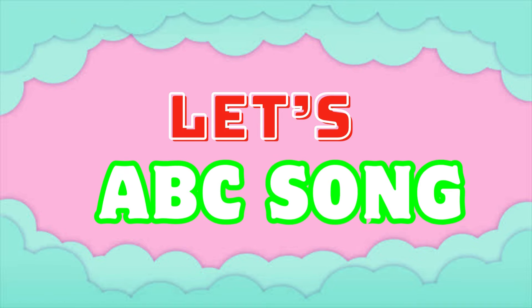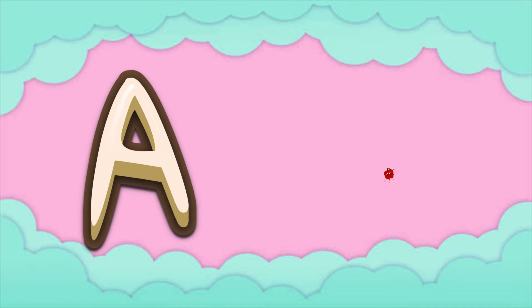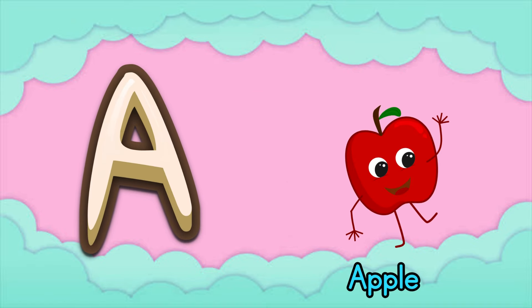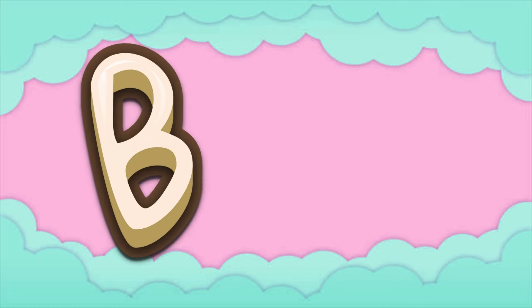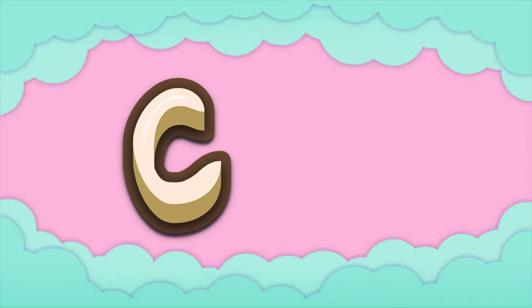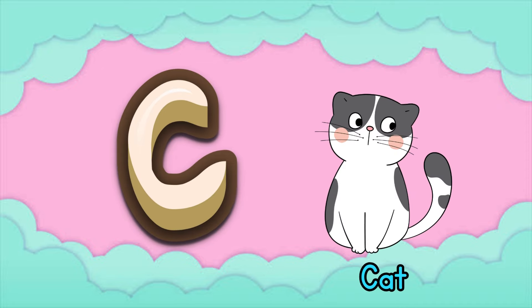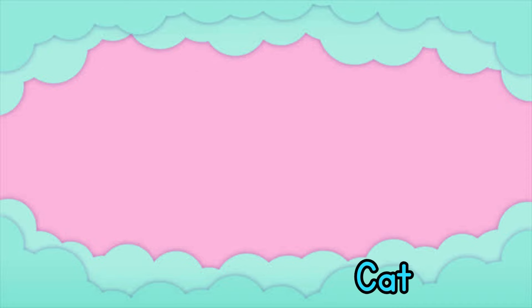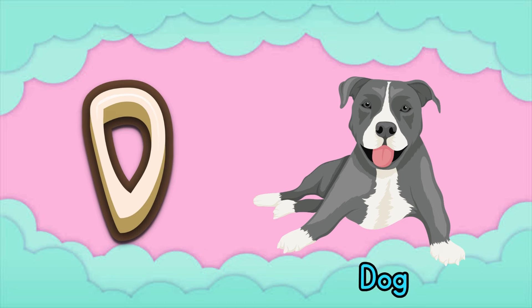Dum-dee-da-dum-dum-dum. A is for apple, a-a-apple. B is for ball, b-b-ball. C is for cat, c-c-cat. D is for dog, d-d-dog.